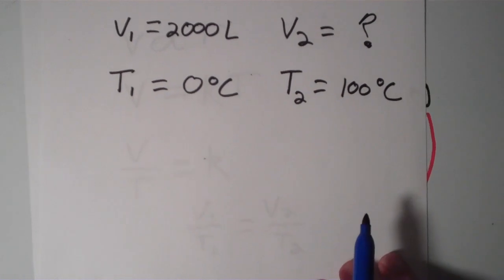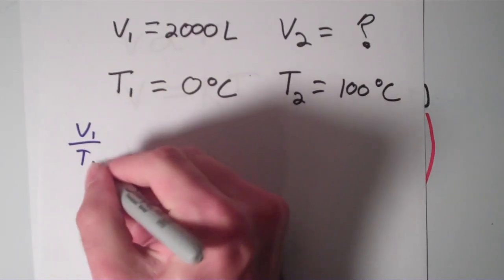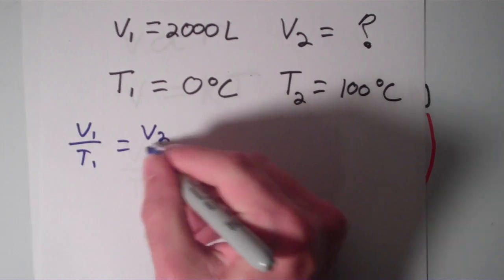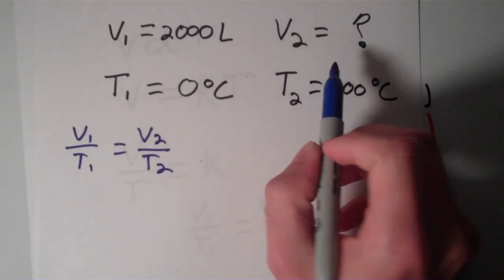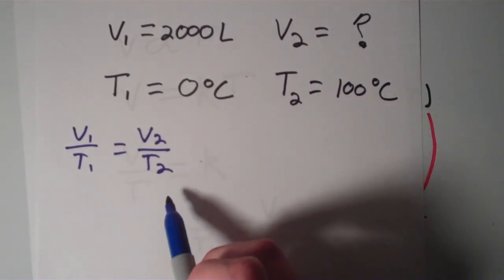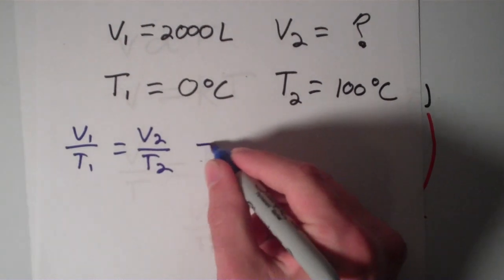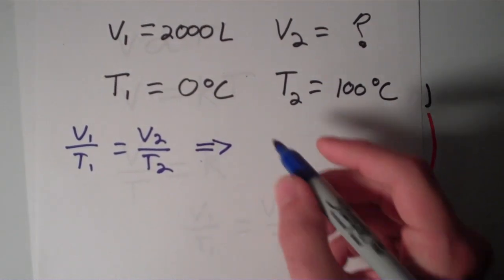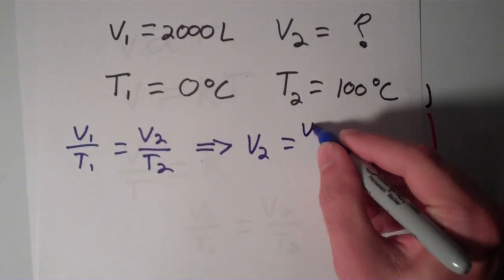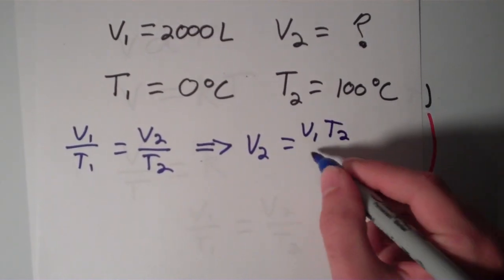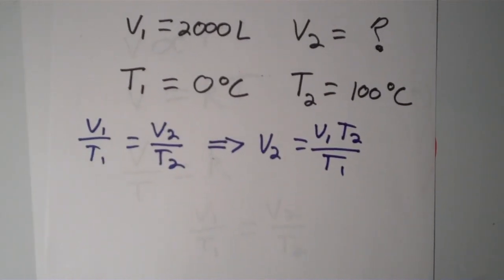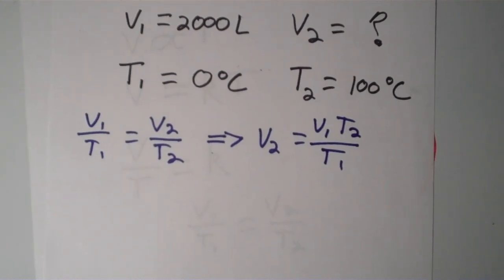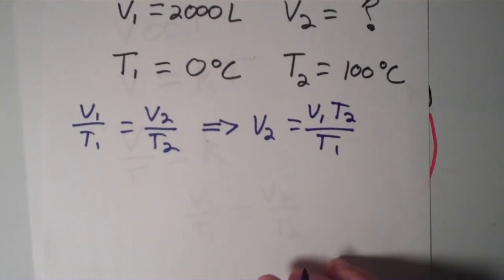So let's set up our equation. We have V1 over T1 equals V2 over T2. And our unknown is V2, that's the one that we need, so to get V2 all by itself, I'm going to multiply both sides of this equation by T2. And I'll end up getting V2, and I'll end up getting that V2 is equal to V1 times T2 over T1. And now it's just a matter of plugging in the values.